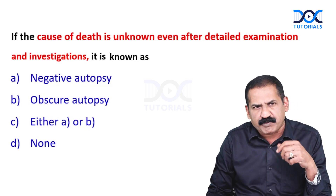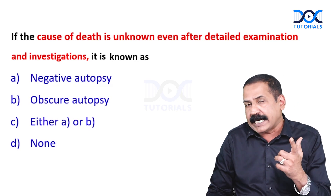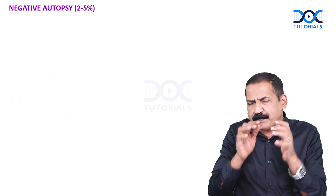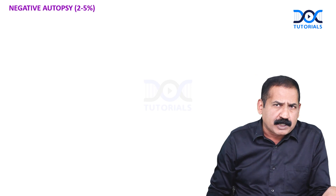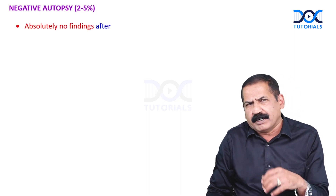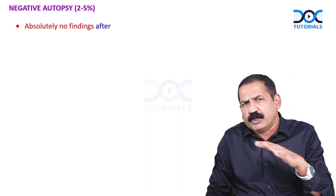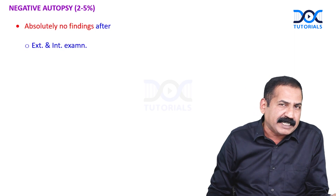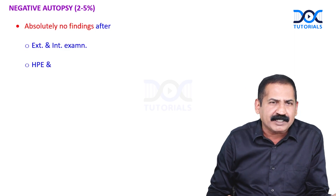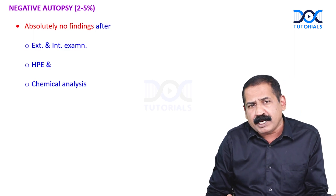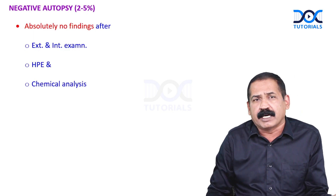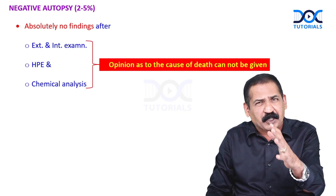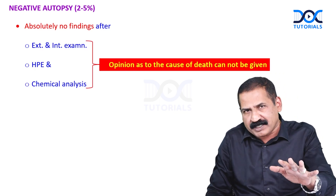Let me teach you the exact difference between negative and obscure autopsy. Two to five percent of autopsies are negative autopsies, where absolutely no findings are present after external examination, internal examination, histopathological examination, and chemical analysis — and an opinion as to the cause of death cannot be given.